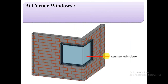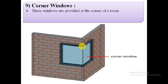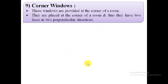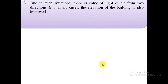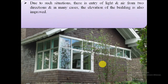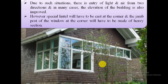The next type is corner windows. Corner windows are provided at the corner of a room and have two faces in two perpendicular directions. Due to this situation, there is entry of light and air from two directions and in many cases the elevation of the building is also improved. However, a special lintel will have to be cast at the corner and the jamb post of the window at the corner will have to be made of heavy section.